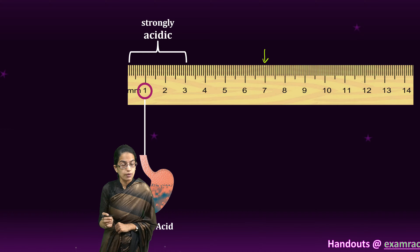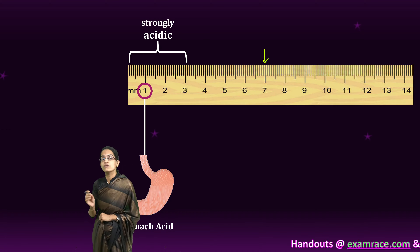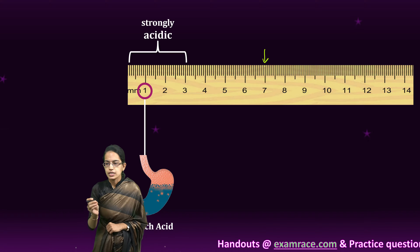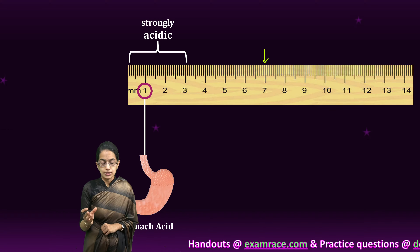A simple example: if any bone or teeth goes into the stomach, the acid of the stomach would burn or damage it. So even the strongest materials of our body — bone and teeth — can be destroyed by the acid of the stomach.